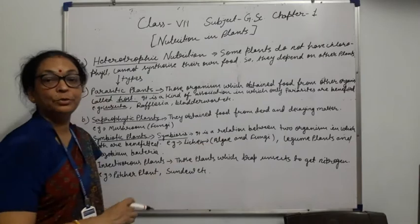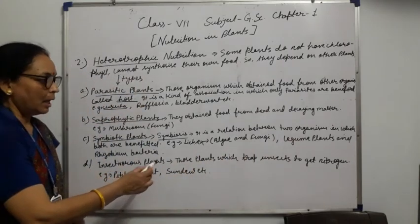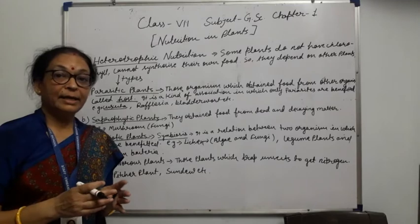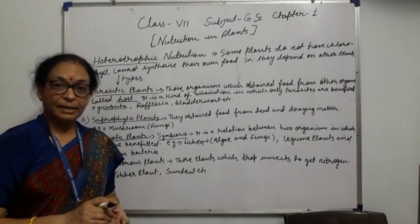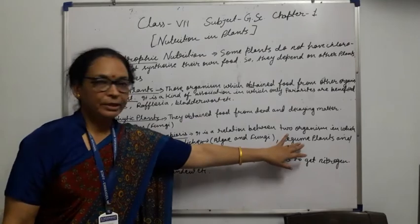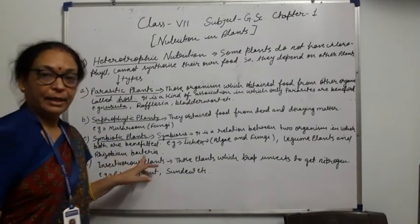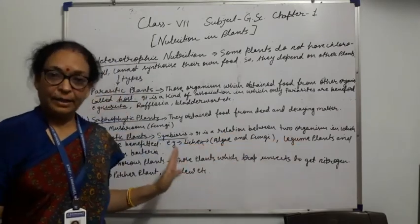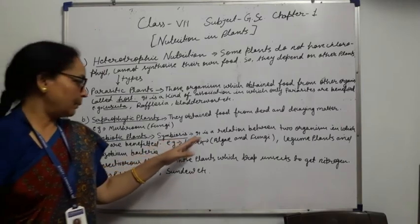These organisms are called symbionts. Another example is legume plants and Rhizobium bacteria. Legume plants are those plants that produce pulses — such as moong, arhar, chana. In these plants, there is a deficiency of nitrogen, so nodules are formed on their roots — small knot-like structures. Bacteria found in these nodules provide nitrogen to the plant, and the plant provides shelter to the bacteria. In this way, there is a symbiotic association between them. That is also the best example of symbiotic plants.